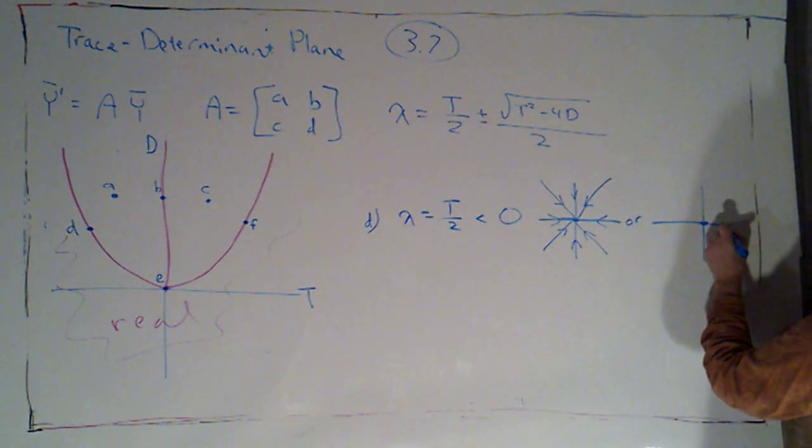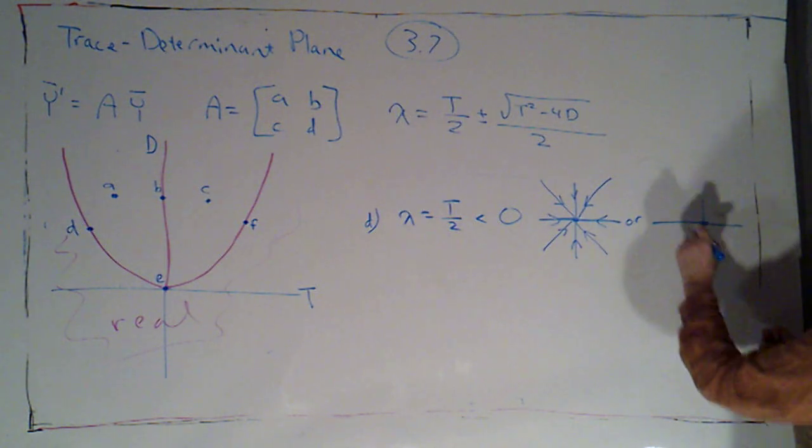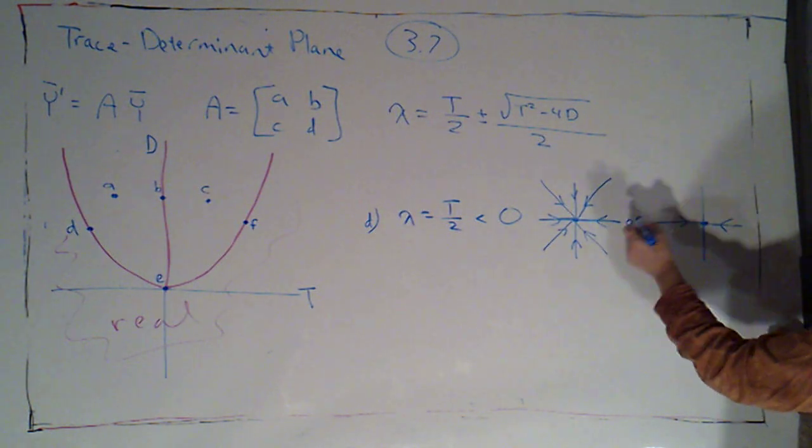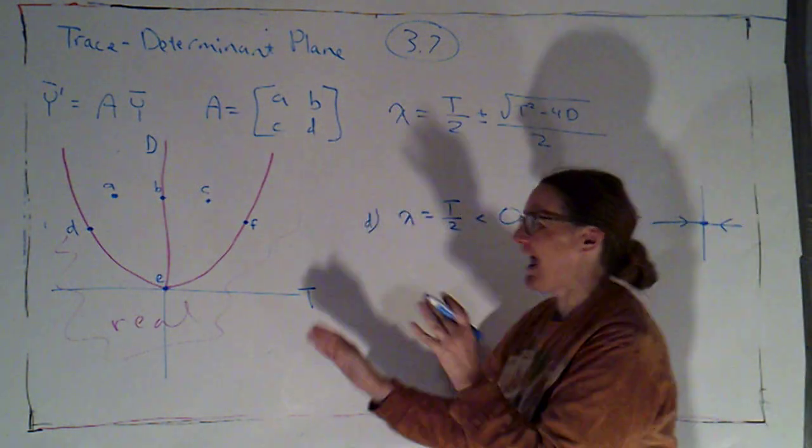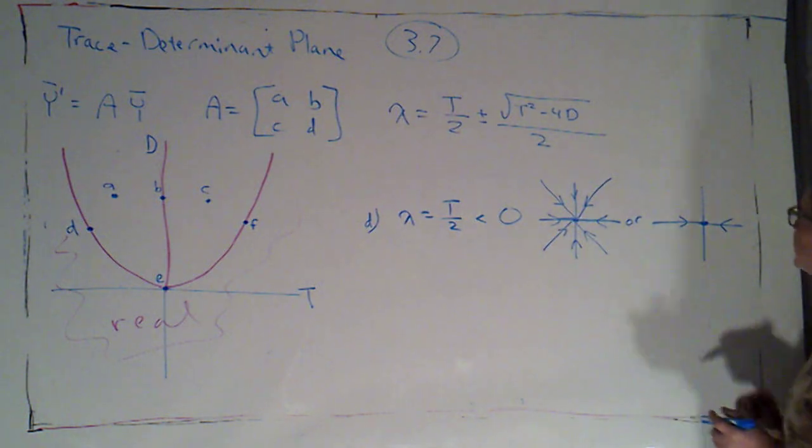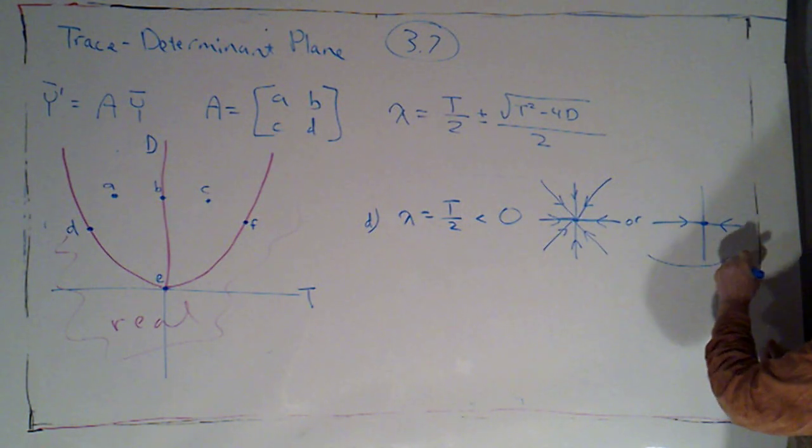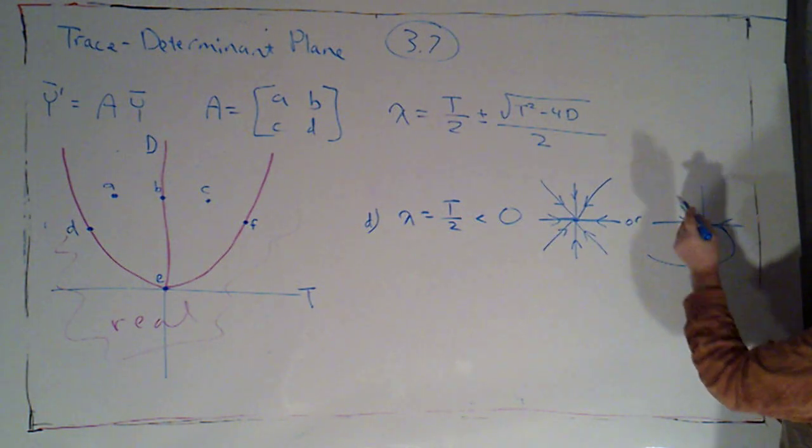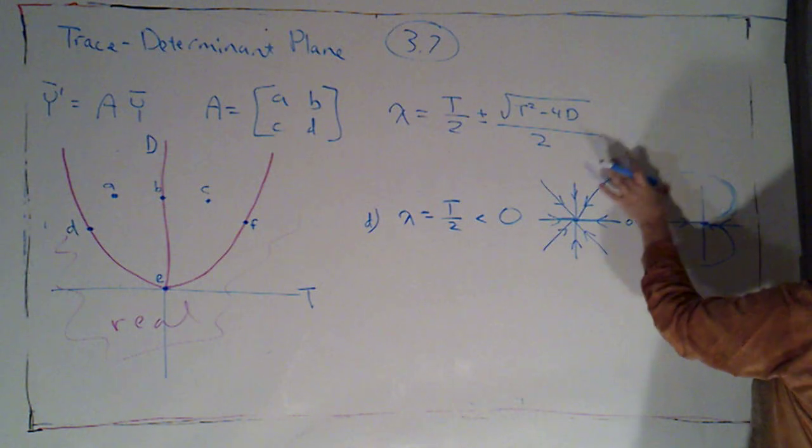or it could be that I just have one independent eigenvector. I'm just going to draw it as if it's on the x-axis. Obviously, I'd need more information about the matrix and how I ended up here to know exactly what the eigenvector was. And then remember, this is the situation where my solution curves are trying to spiral, but they simply can't. It would have to be a mirror image over here.